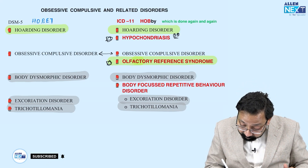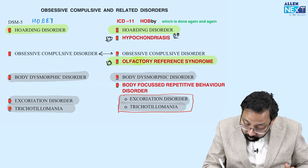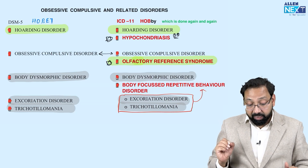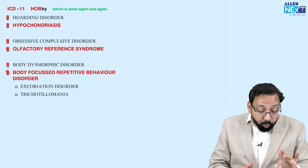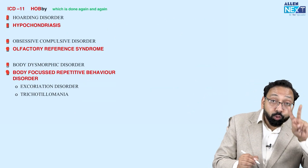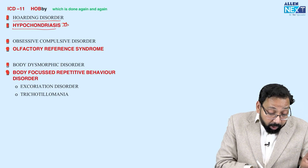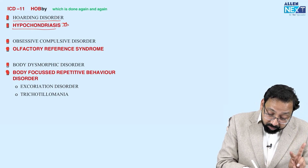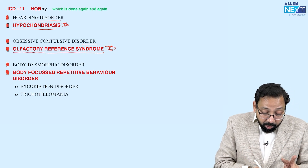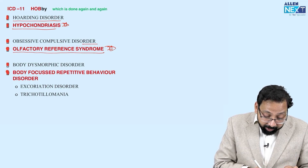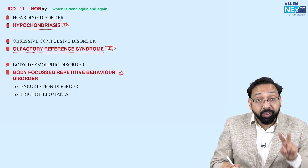ICD-11 states that excoriation and trichotillomania are jointly called body-focused repetitive behavior disorder. So the ICD-11 mnemonic is HOBBY: H for hoarding disorder and hypochondriasis, O for OCD and olfactory reference syndrome, B for body dysmorphic disorder and body-focused repetitive behavior disorder — with three new additions in ICD-11.